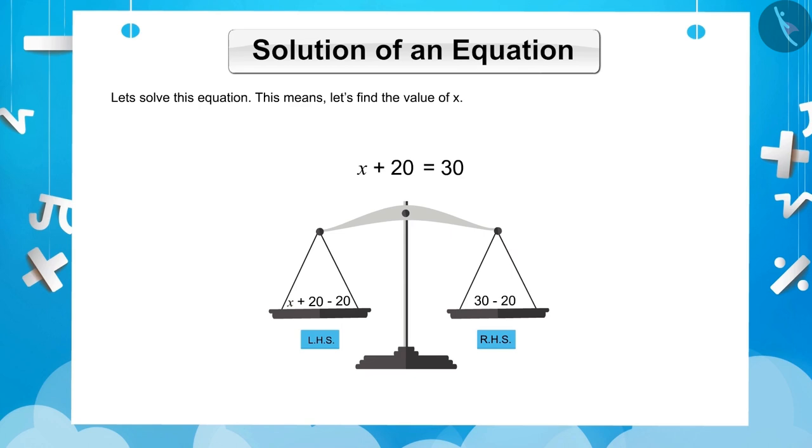Therefore, whatever operation we do in LHS, we will have to do the same operation in RHS also. Now, we will subtract 20 from both sides so that we get X is equal to 10.